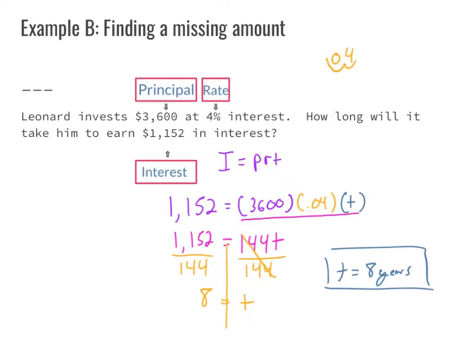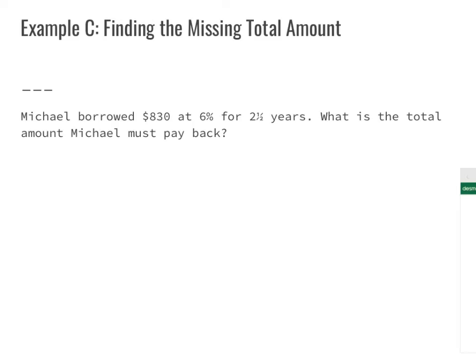Now let's take a look at Example C. It says: find the missing total amount. Michael borrowed $830 at 6% for two and a half years. What is the total amount that Michael must pay back? We identify our values: $830 is our principal, 6% is our rate, and two and a half years is our time. We write our formula: I = P × R × T.